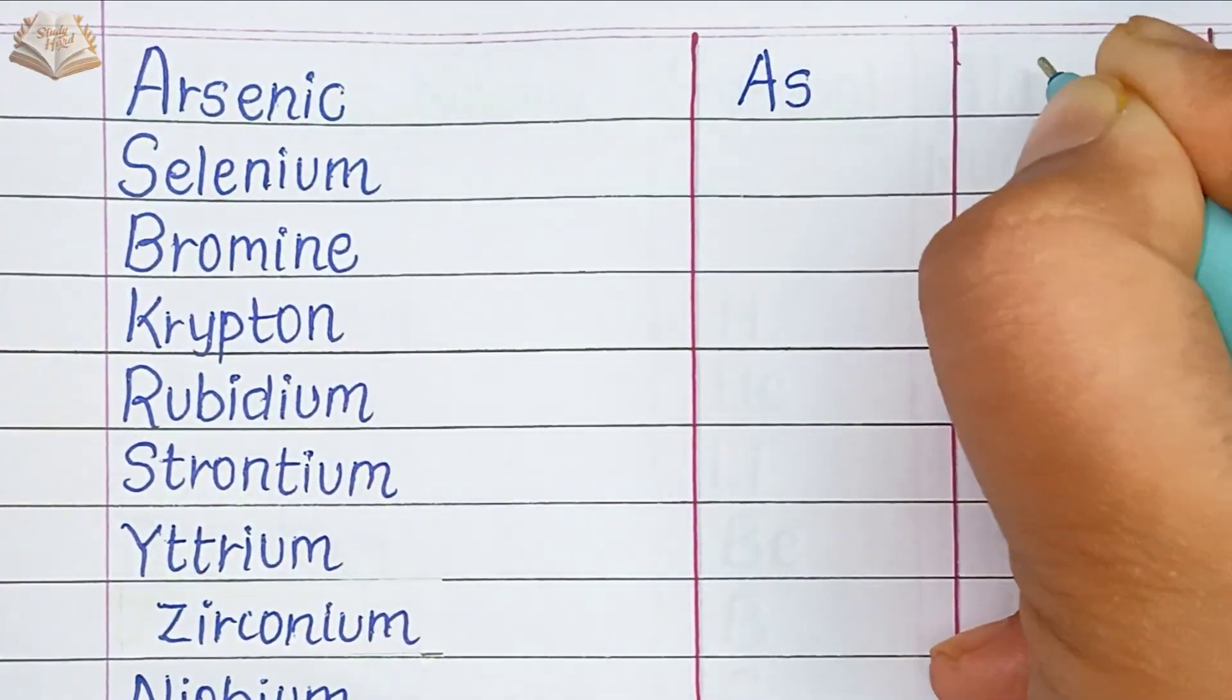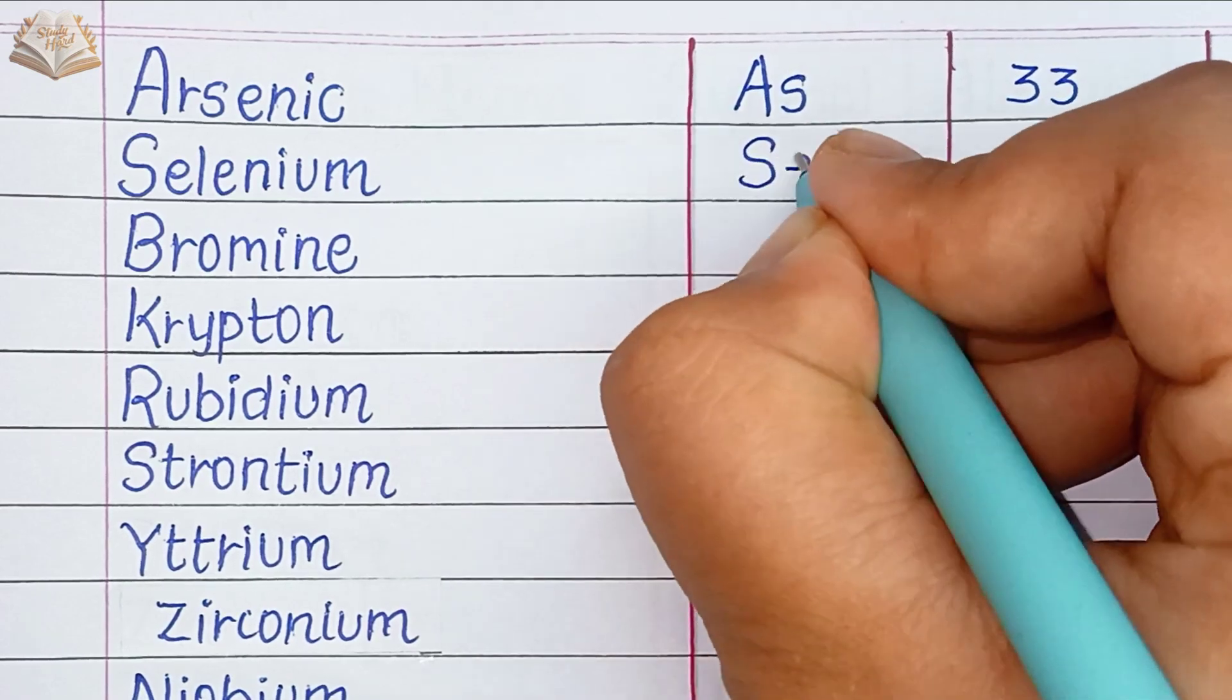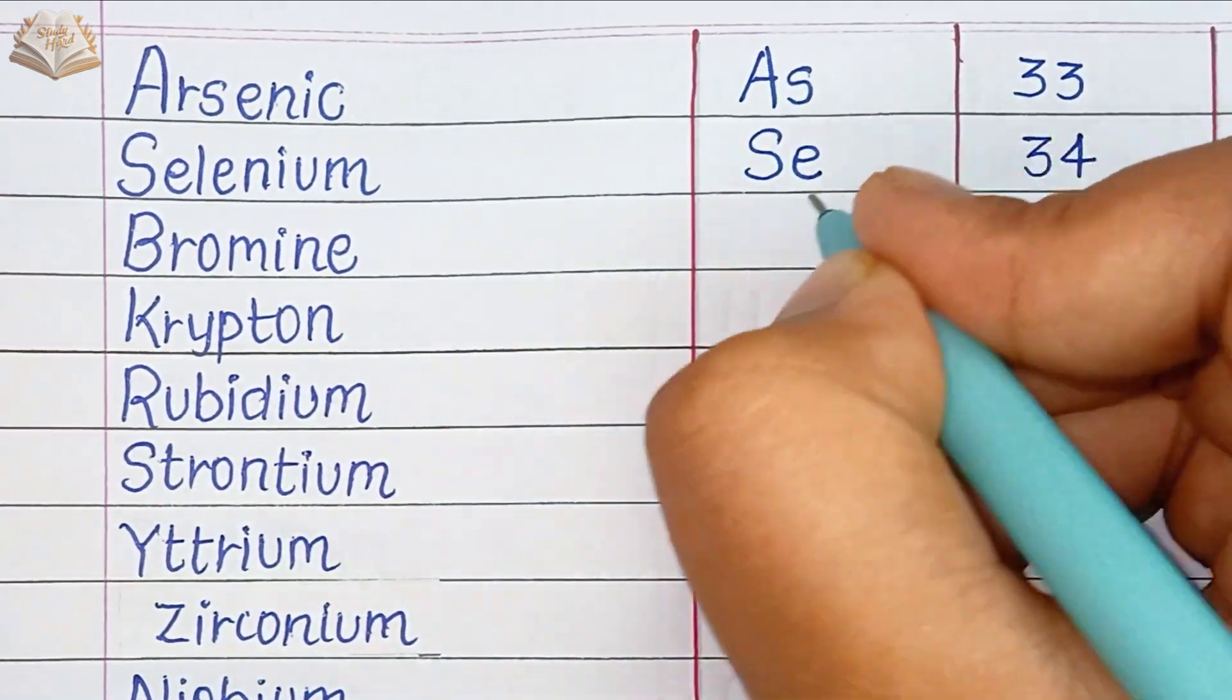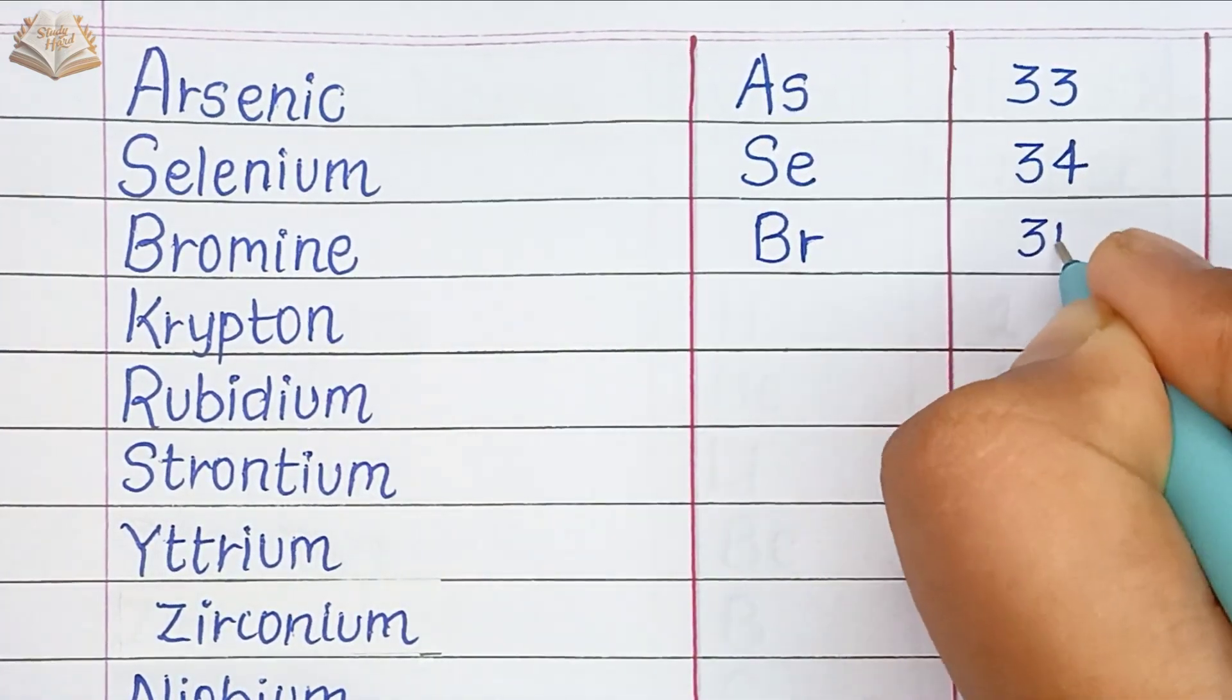Arsenic, AS, atomic number 33. Selenium, SE, atomic number 34. Bromine, BR, atomic number 35.